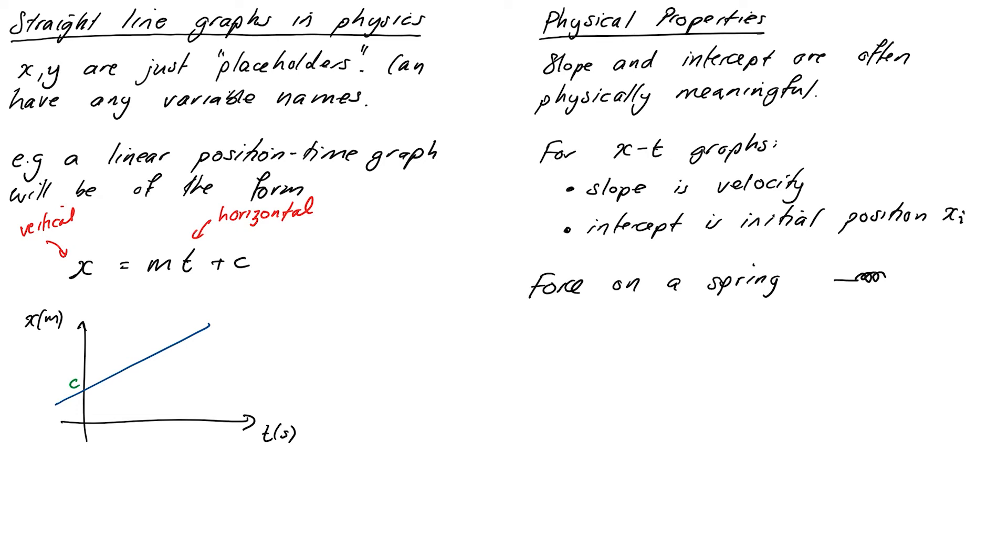Or looking ahead in the course slightly, given a spring, the force applied to a spring is proportional to its extension, and there's a formula called Hooke's Law that looks like f equals kx. If you had a graph, therefore, of force versus extension, then the slope of this graph will be the spring constant k. Just a heads up, though you don't actually know about forces and springs yet. You'll learn about these a bit later on in the course. It's just another example where something physical comes out of a straight line relationship. In this case, the slope of our graph was the spring constant k.